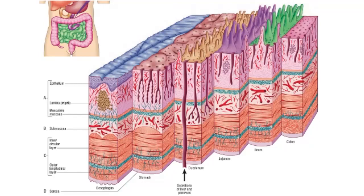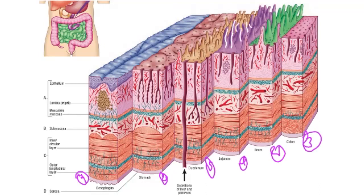Comparing different layers across the intestinal canal — from esophagus, stomach, duodenum, jejunum, ileum, to colon — in the jejunum there are more villi, and in the ileum there are more villi along with Peyer's patches representing lymphoid tissue.